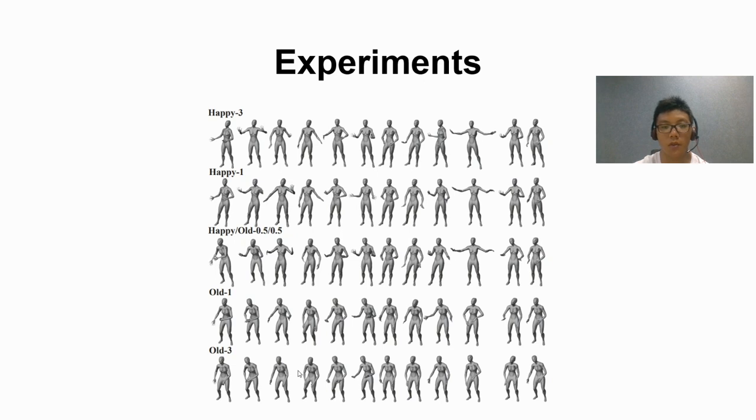In contrast, when we use the old style with gamma equals 3, its waist is the most bent, the hands are barely lifted, and there is not much change in the whole movement sequences.